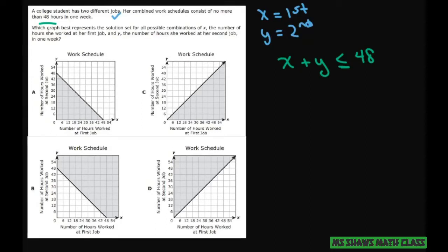Now since this is linear, I'm going to go ahead and solve for Y here and subtract X from both sides of the equation. So you get Y is less than or equal to negative X plus 48.